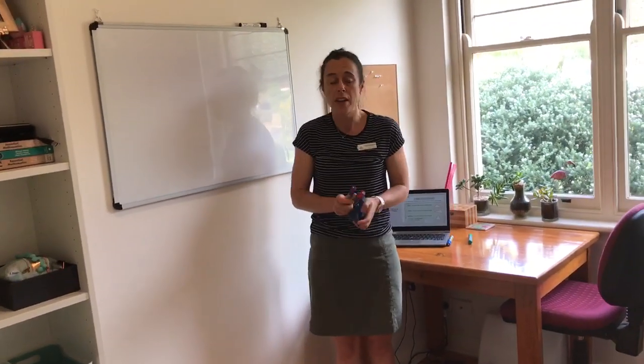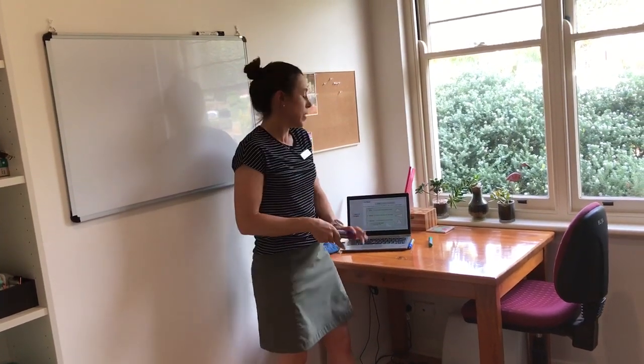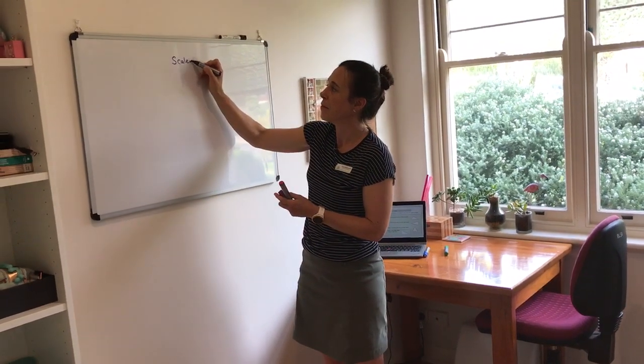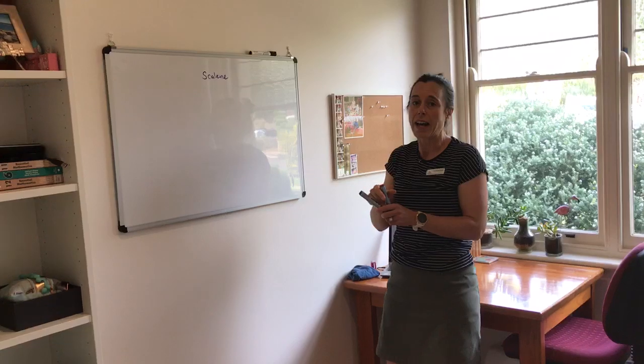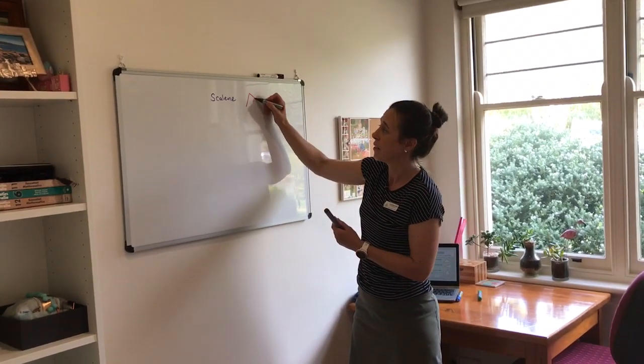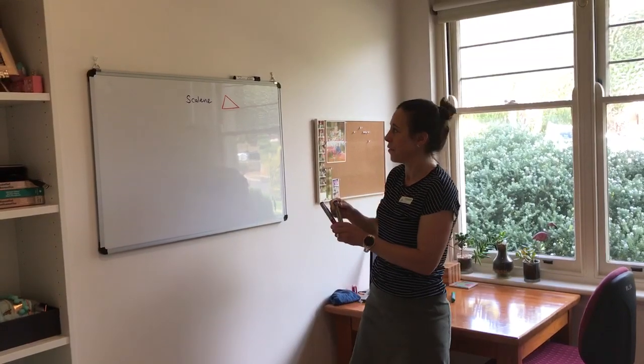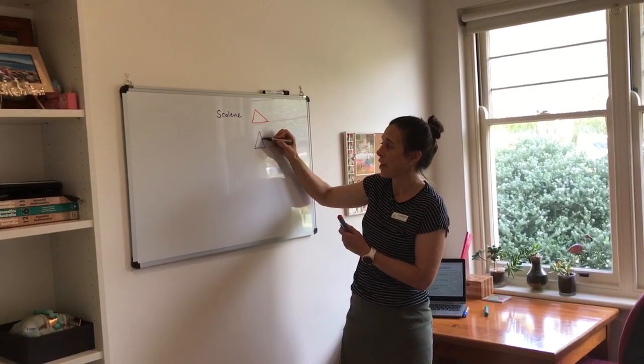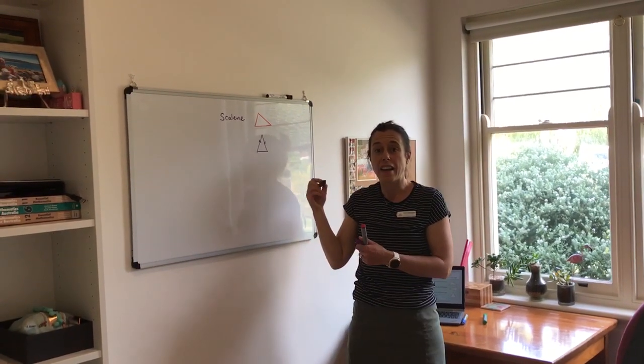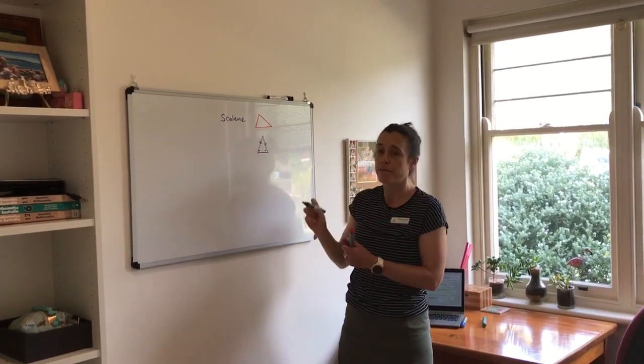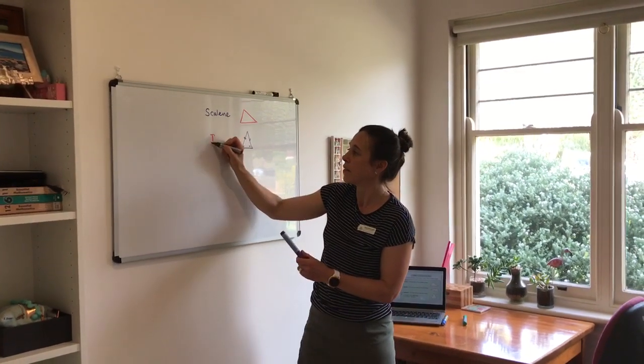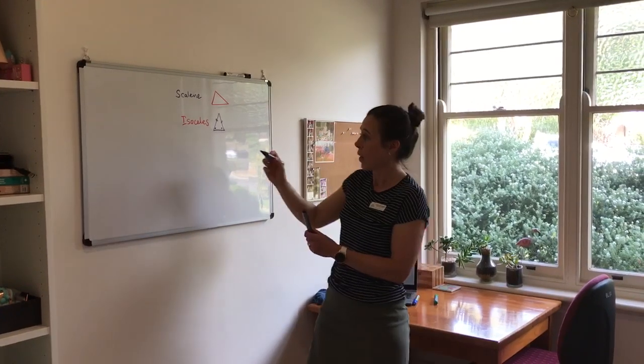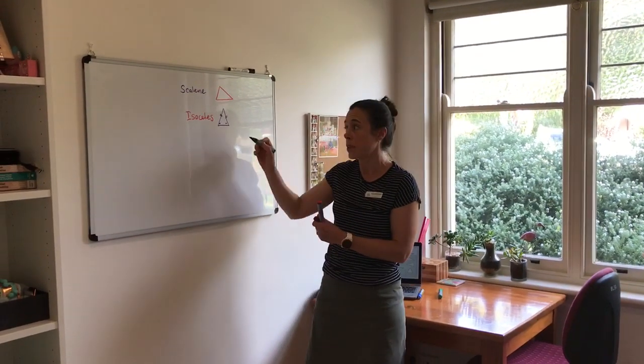We have four different types of triangles that you will need to be familiar with. So scalene, scalene have all sides that are different lengths. Isosceles triangle have two sides that are the same and therefore two angles that are the same. And our third type of triangle is equilateral, where we have all sides equal length.